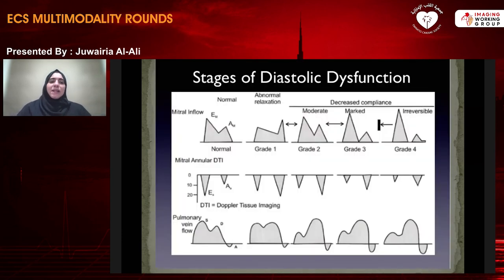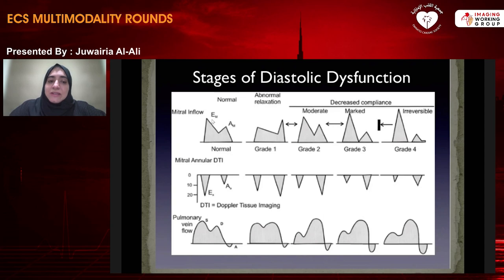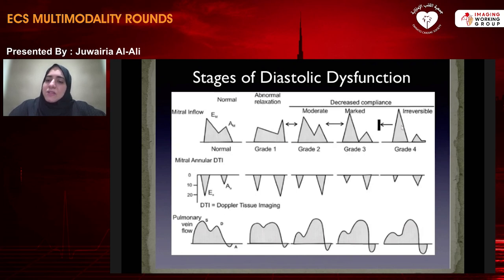This is the classic classification of diastolic dysfunction. With normal filling, you have a prominent E wave and a small A wave. With abnormal relaxation, the E wave becomes smaller with an E to A ratio less than 0.8, and tissue Doppler is equally affected. With grade 2 — pseudonormalization — the E to A ratio appears similar to normal, but tissue Doppler E prime is reduced. With grade 3 diastolic dysfunction, E velocity is higher with shorter deceleration time. Grade 4 has even higher E velocity with shorter deceleration time and is irreversible.